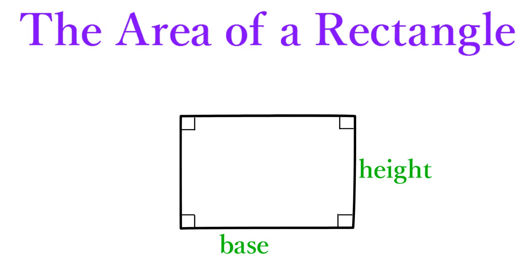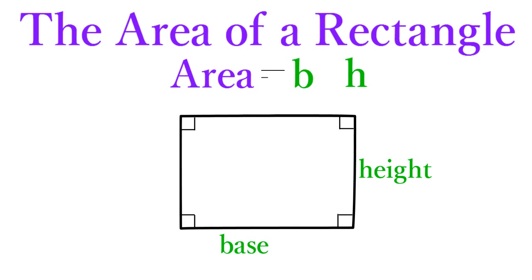These two sides of a rectangle are called the base and the height of that rectangle, abbreviated B and H. When you know the lengths of a rectangle's base and height, you can calculate the area of that rectangle by using the formula: area equals B times H.